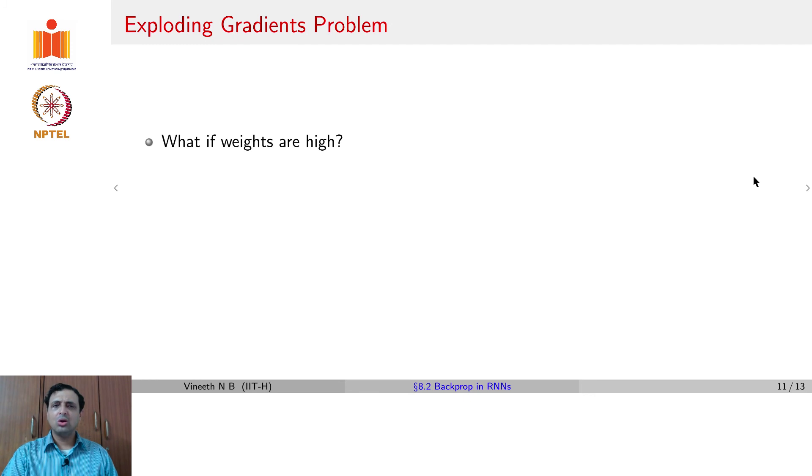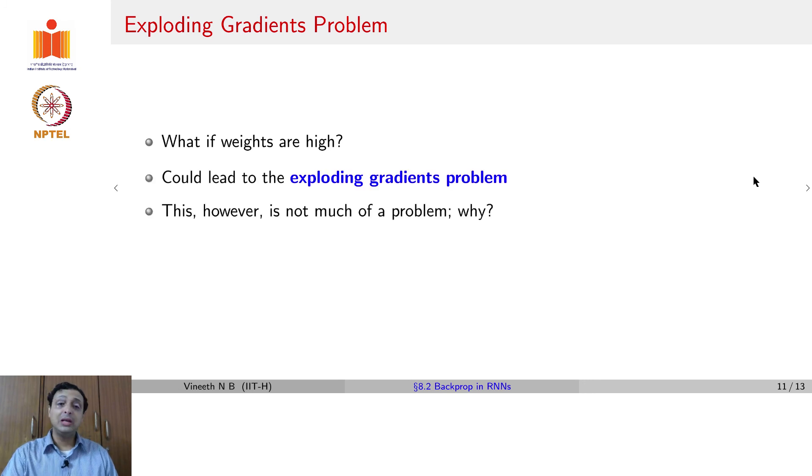But before we go there, let us ask the counter question, what if I did not use a sigmoid activation function? What if I just use the linear activation function? Let us assume, on the contrary, that each of my gradients, ∂h_3/∂h_2, or ∂h_2/∂h_1, they are very high values, then multiplying all of them could lead to what is known as the exploding gradient problem. Because the product of values say in the range of 10, by multiplying three such values, you will quickly go to 10 power 3 magnitude. And that can lead to an explosion, exploding gradient problem.